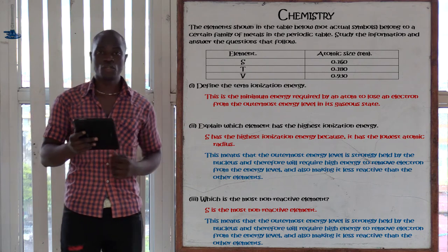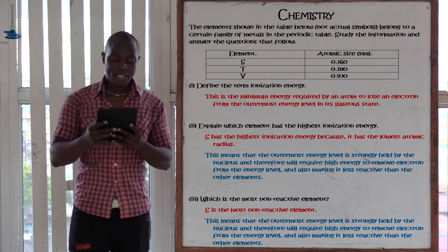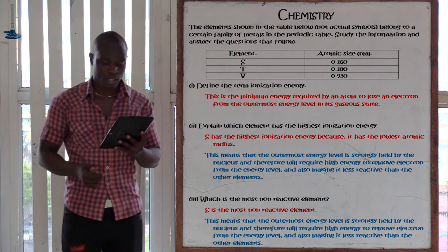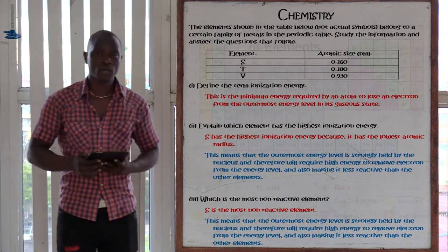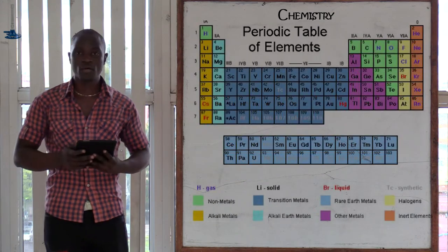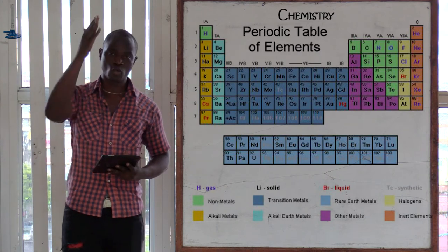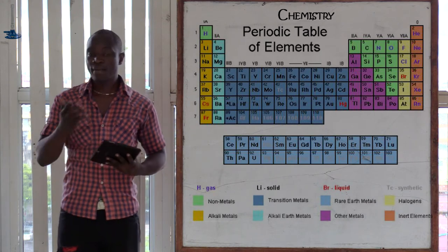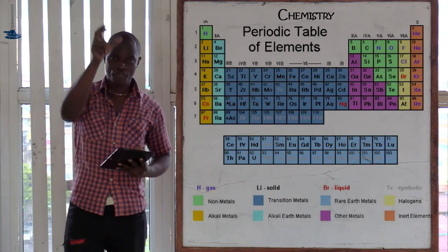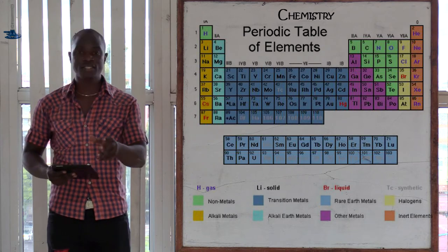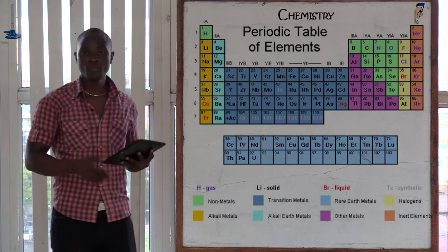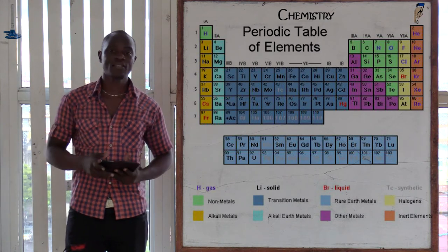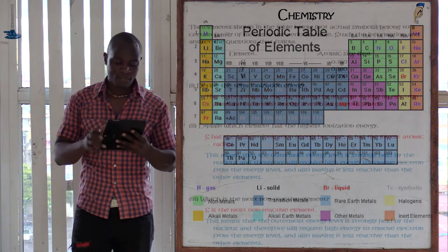Question 18: the elements in the table belong to a certain family of metals in the periodic table. Chemical families include: alkali metals (group 1), alkaline earth metals (group 2), metalloids or charcoals (group 4), halogens or salt producers (group 7), and noble/inert/rare gases (group 8).